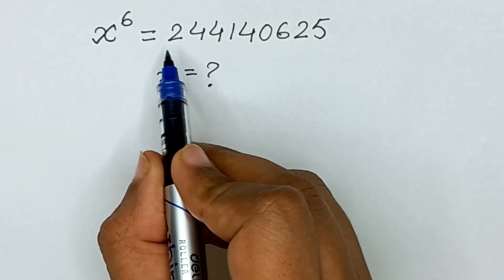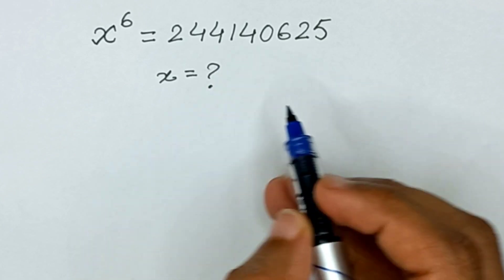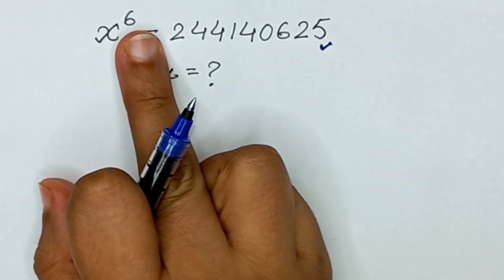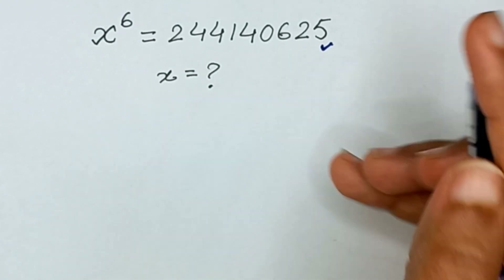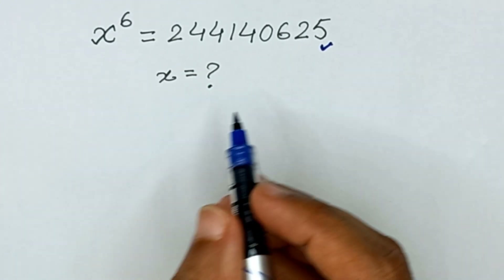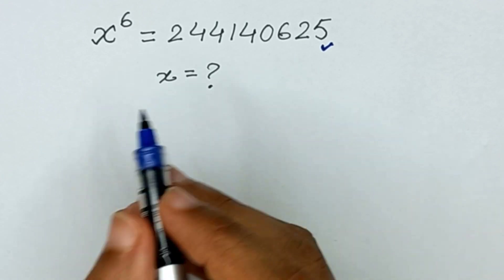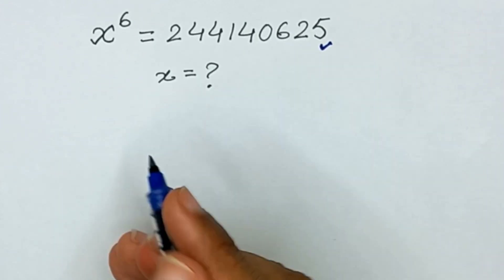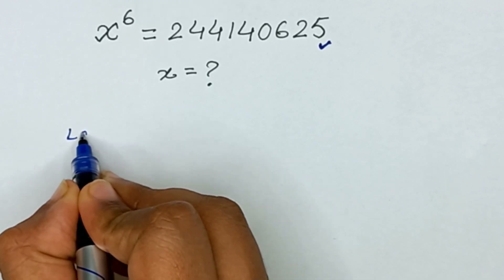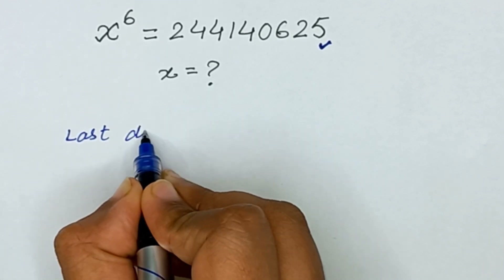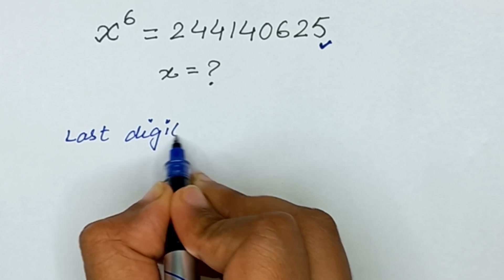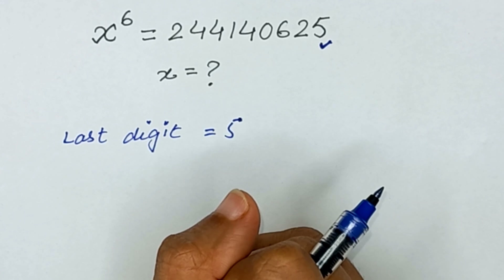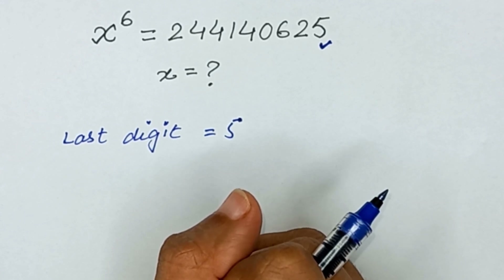We can see that this larger number has a last digit of 5. If x raised to the power 6 has a last digit of 5, then the last digit of x is also 5.